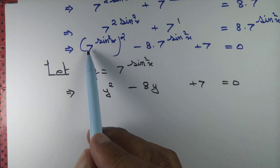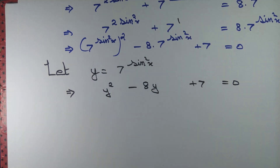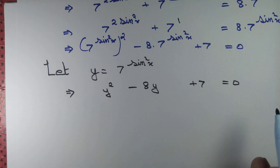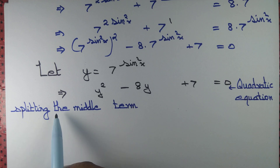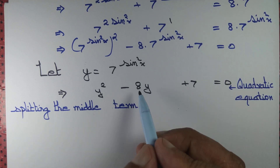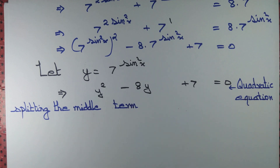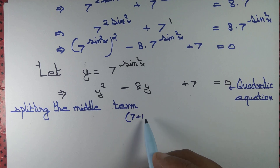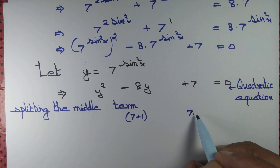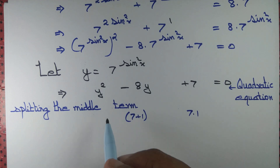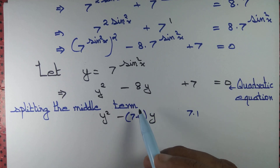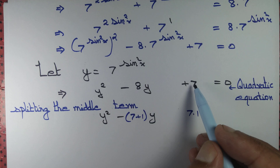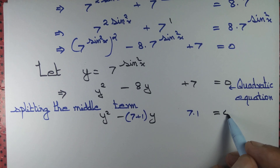We set 7 to the power sine square x equal to y. This gives us a quadratic equation. We will solve it by the splitting the middle term method, which is easier here. We split 8 as 7 plus 1, since 7 equals 7 times 1. So we write y squared minus 8y as y squared minus (7 plus 1)y, plus 7 equal to 0.